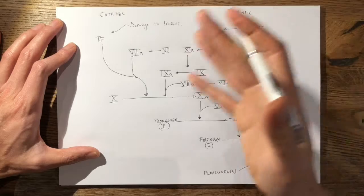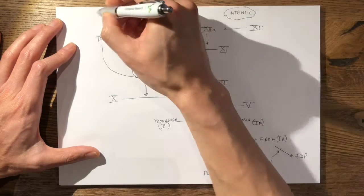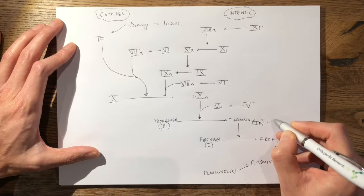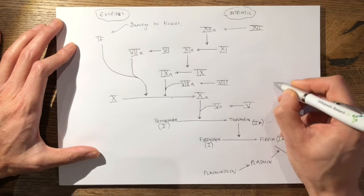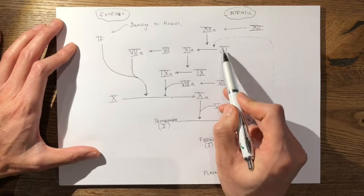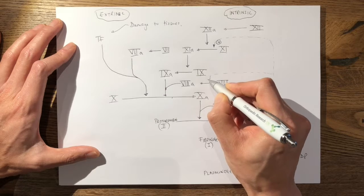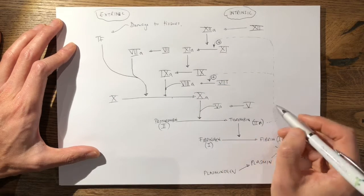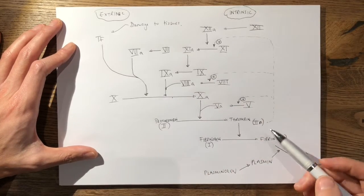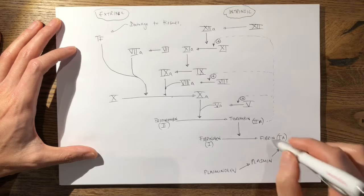There is also a positive feedback loop in the coagulation cascade when it all kicks off. When you get down to your thrombin, thrombin itself has a positive feedback loop which works at three places. It positively feeds back to promote the conversion of factor 11 to 11a. It also promotes the conversion of factor 8 to factor 8a. And finally it promotes the conversion of factor 5 to factor 5a. This positive feedback loop propagates and amplifies the cascade to the final product, which is your fibrin clot.